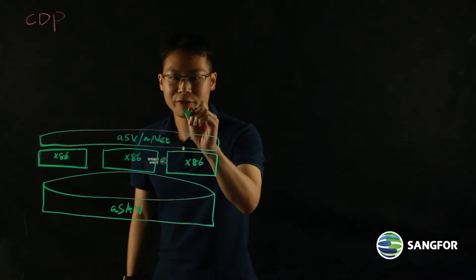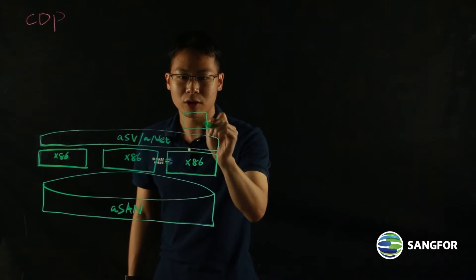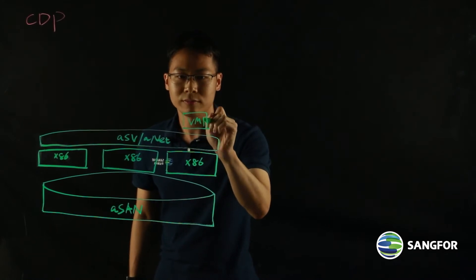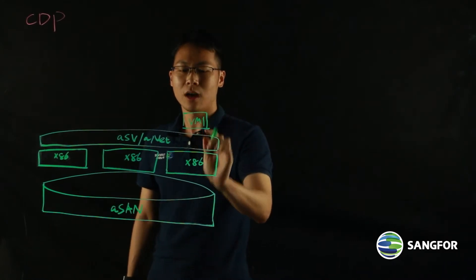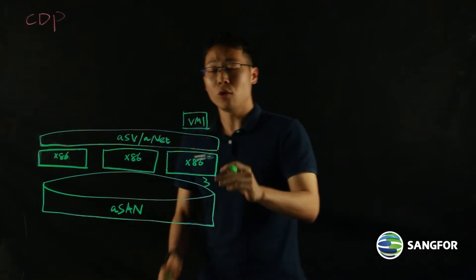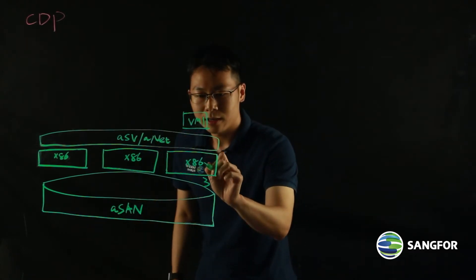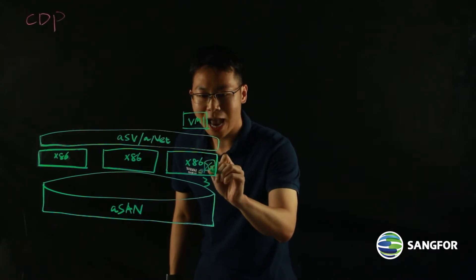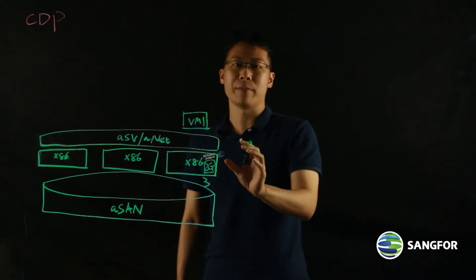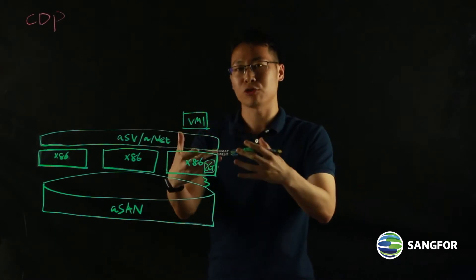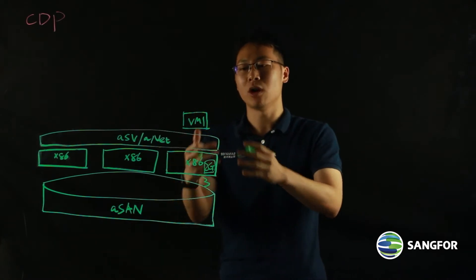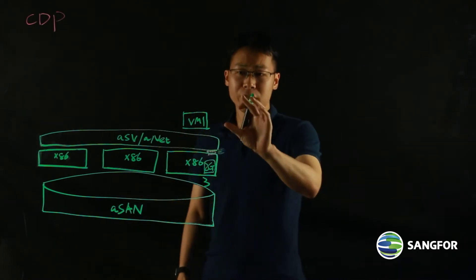Let's say I have a most business critical application running on the VM1 here on node 3. So if I enable CDP for this VM, the system will pre-allocate 2GB of RAM for that VM to cache the IO-Lock buffer of that VM.